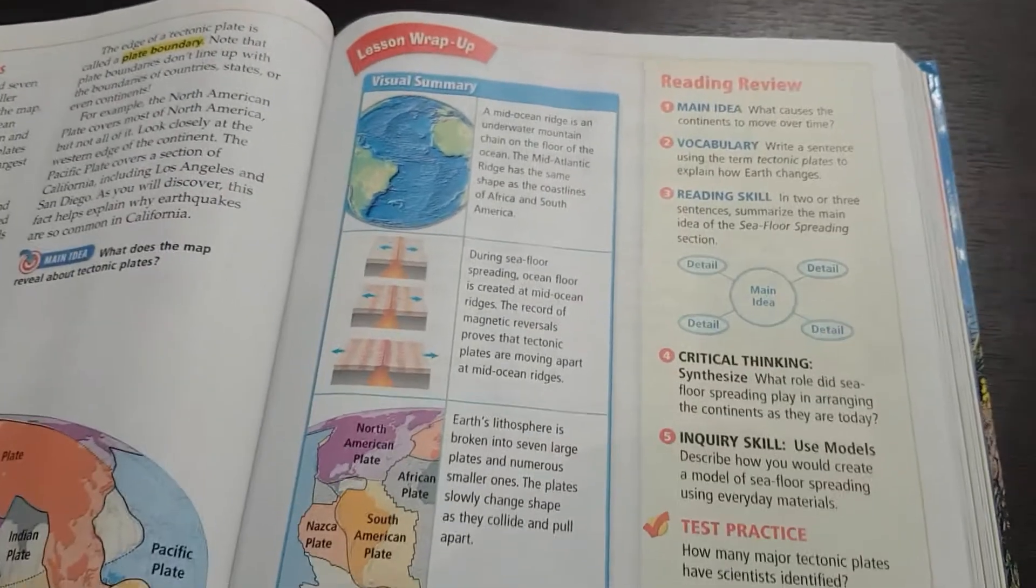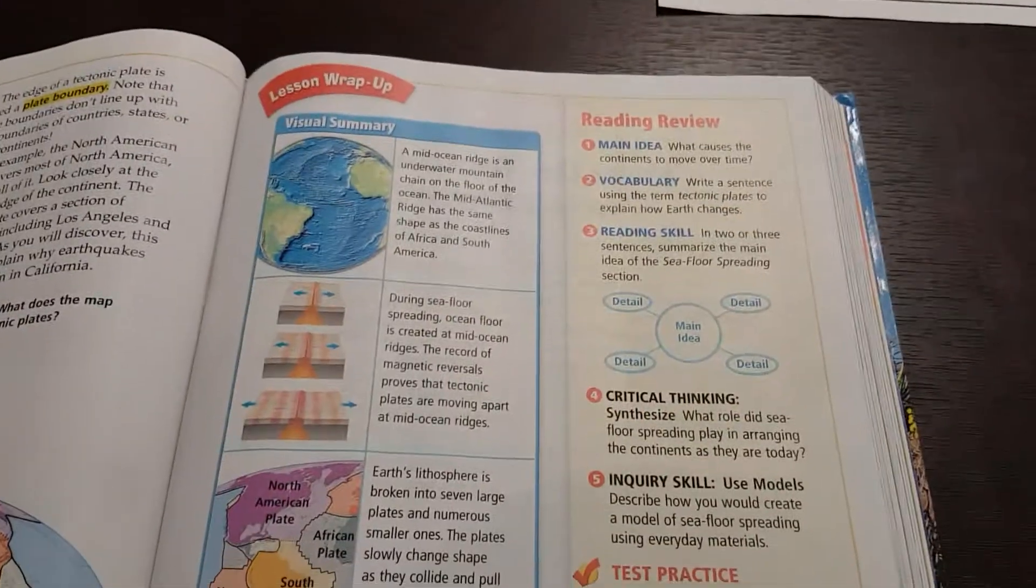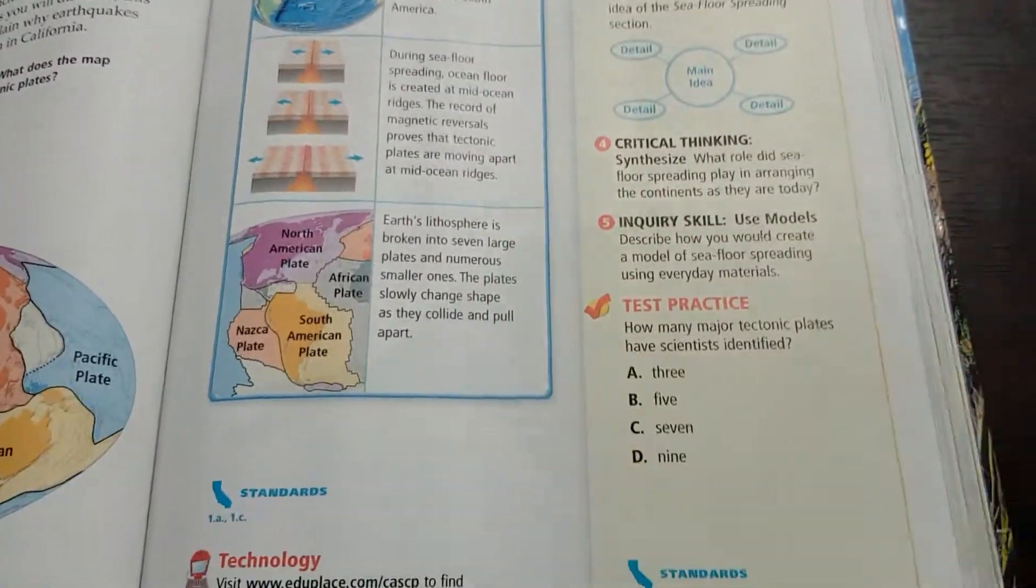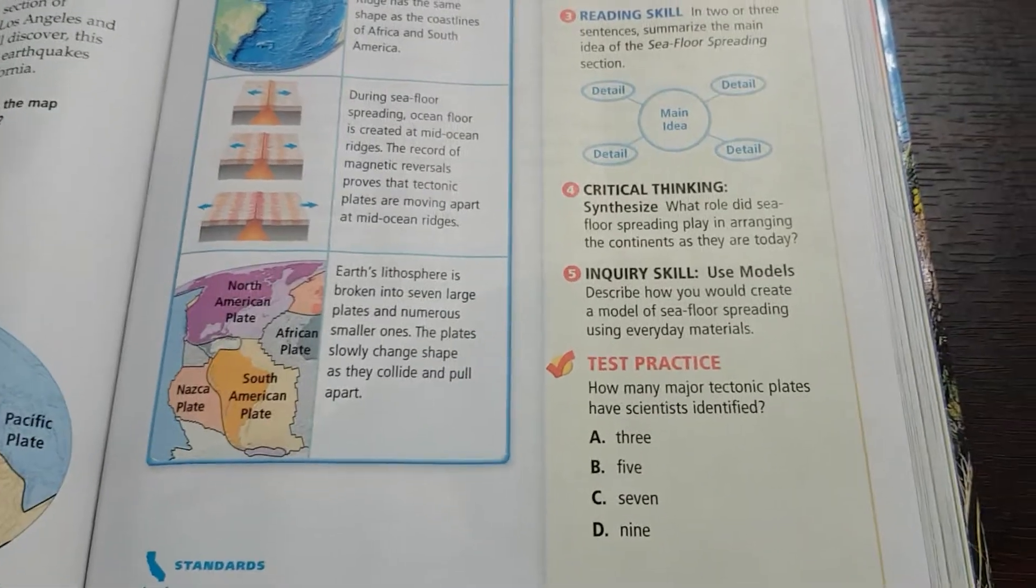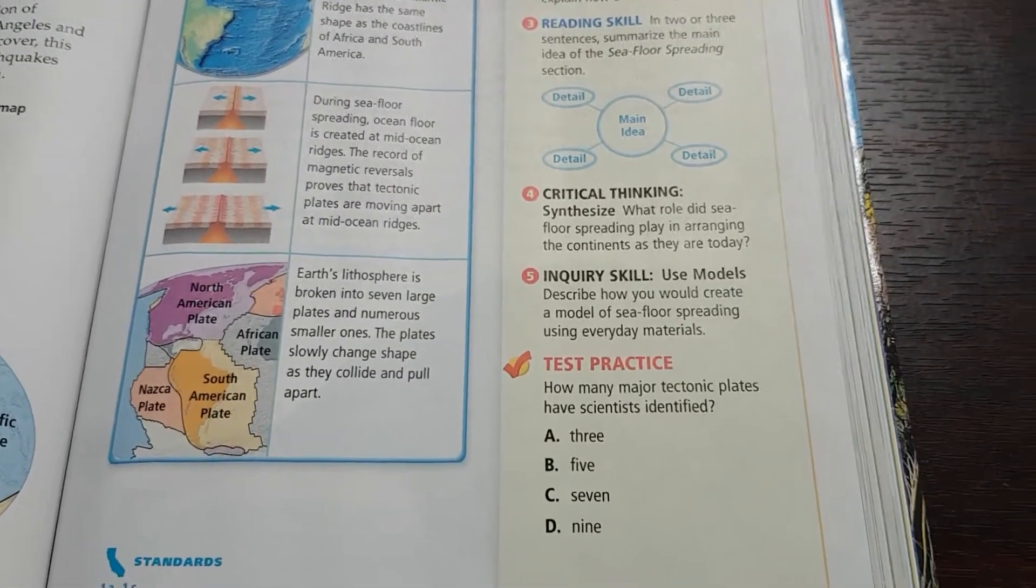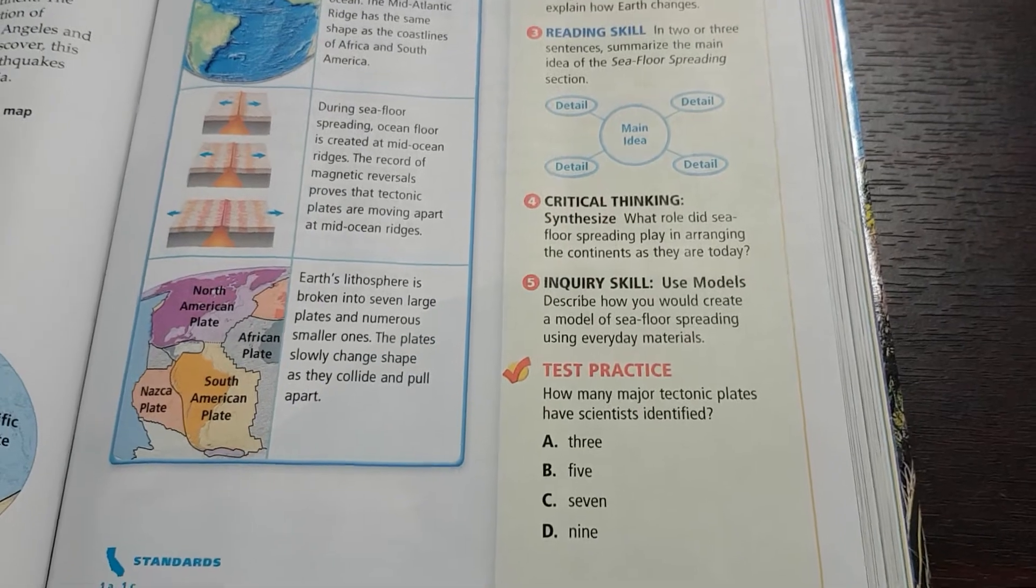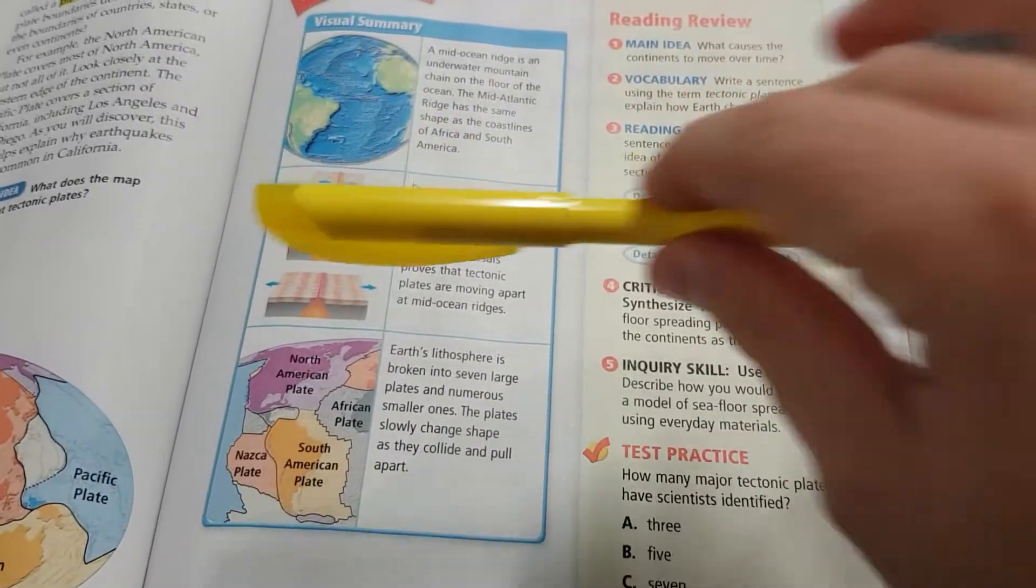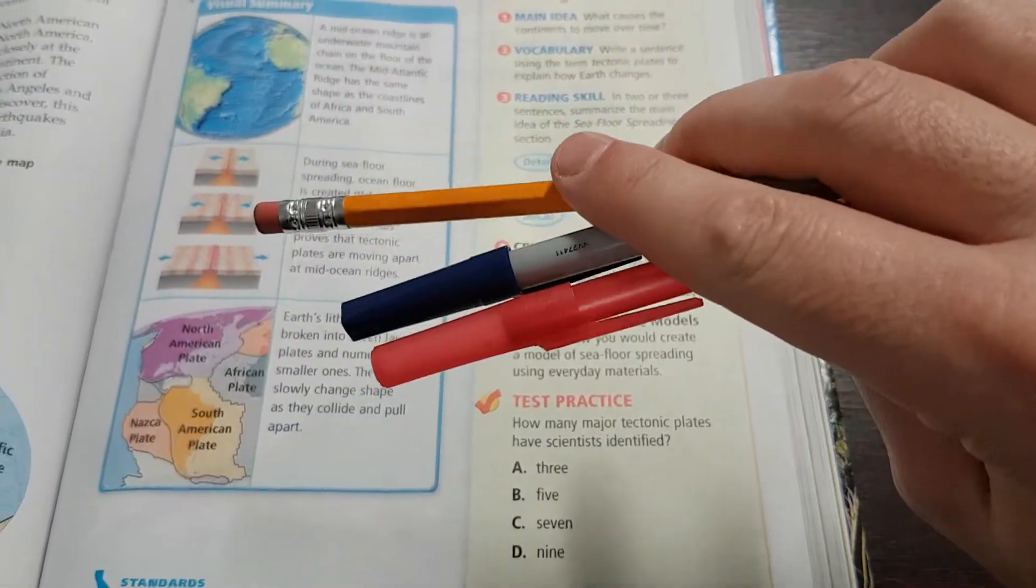All right, here we are, phase two processing. First thing we're going to do is use the visual summary that they give us to highlight, underline, annotate, star, and mark all of the key details supporting the main idea. Okay, so you've got your yellow highlighter, you have your pencil and your colored pens or your colored pencils or your colored crayons.